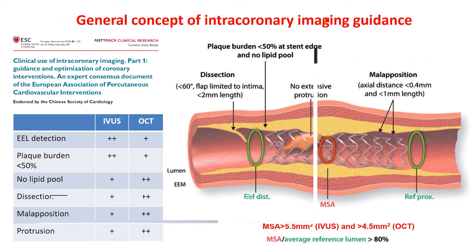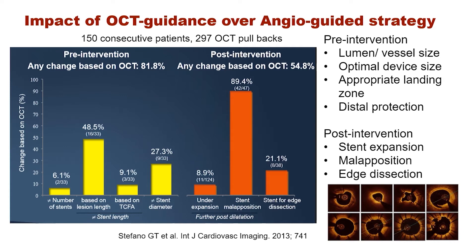This is an actual clinical study comparing angio-guidance and OCT guidance. In pre-intervention, OCT changed strategy in 82% of cases, mainly because of lesion length, stent diameter, and findings of thin cap. In post-intervention, OCT prompted additional procedures due to stent malapposition, edge dissection, and under-expansion.